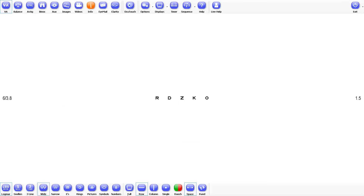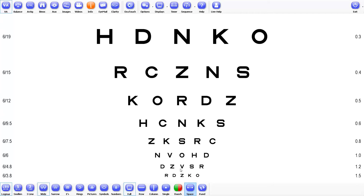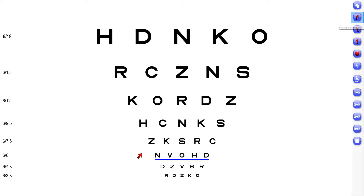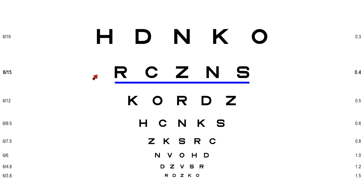The underline feature is useful to direct the patient to a particular line of text. We all have patients that start reading from the top every time we show them a new screen. By simply clicking on the text itself or next to it, it will place a blue line under the row of letters. Clicking again on the same line will remove it, or simply clicking on another line will move it to the new chosen line.